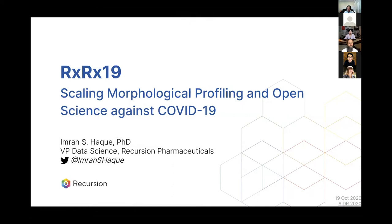What I want to talk about today is some of the work we've done at Recursion against the COVID-19 pandemic, and in particular our large open data release named RxRx19 — a large morphological profiling image and metadata dataset against various aspects of COVID-19 as a disease. We're building a vertically integrated biotech company that builds massive empirical datasets at every step of the process to accelerate drug discovery. Our total imaging dataset is now around four and a half petabytes — 4,500 terabytes of image data.